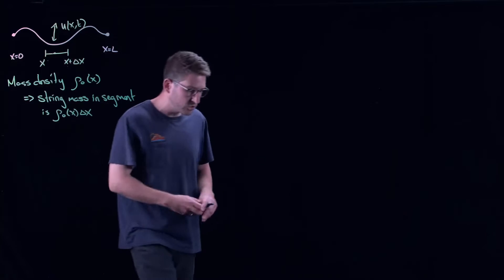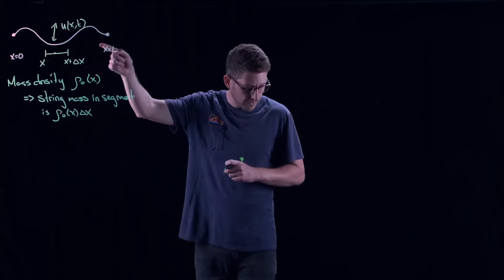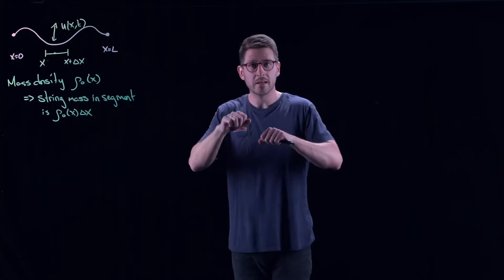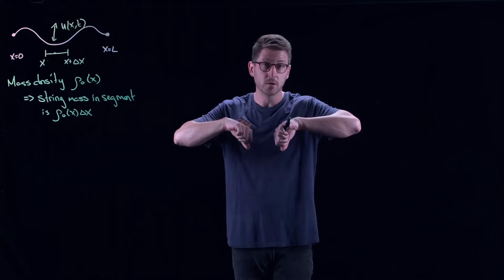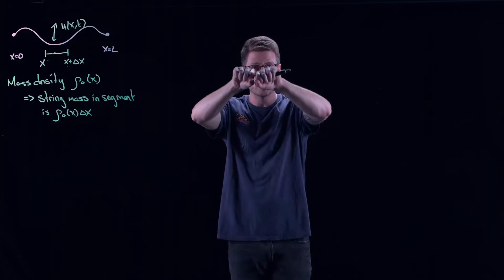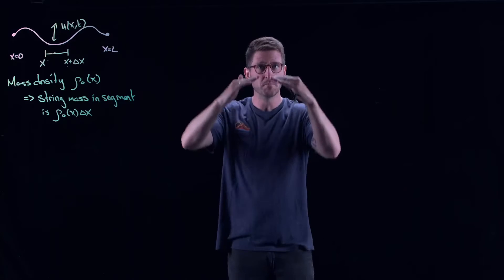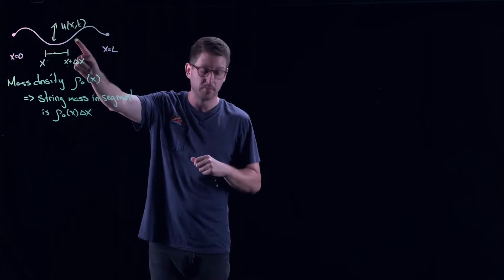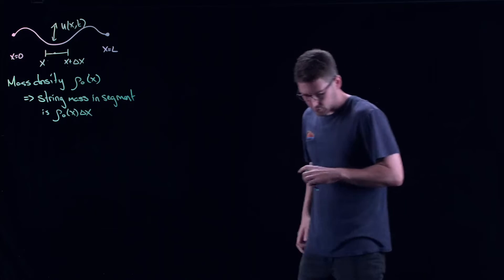Now we're going to assume a few things. The first is that our string is perfectly flexible. What that means is that bending the string does not increase the force on it. It's not like a really hard spring where the more you bend it, you can feel it pulling back on you. We assume our string doesn't have that property — we call it a perfectly flexible string.